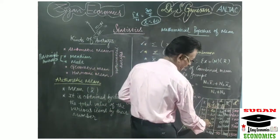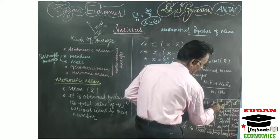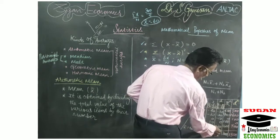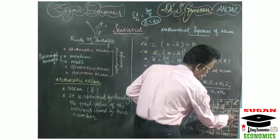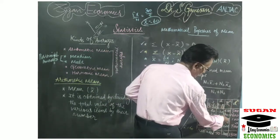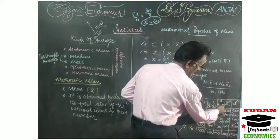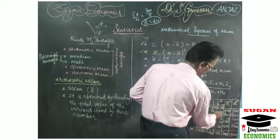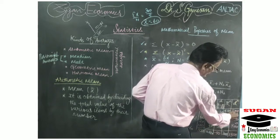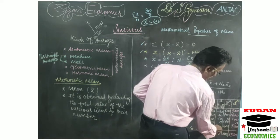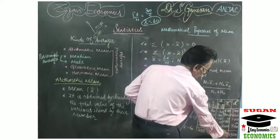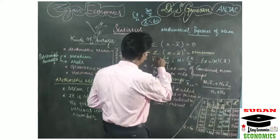Now we take the squares of the deviation values calculated from the arithmetic mean (60): 20² = 400, 30² = 900, 0² = 0, 10² = 100, 40² = 1600, giving a total of 3000. Then we take the squares of the deviation values calculated from the assumed value 70: 30² = 900, 40² = 1600, 10² = 100, 0² = 0, 30² = 900, giving a total of 3500. Comparing these, the sum of squared deviations from the arithmetic mean (3000) is less than from any other value (3500), confirming that the sum of squares of deviations from the arithmetic mean is always minimum.